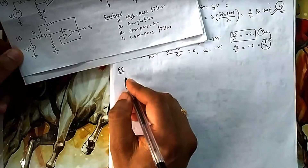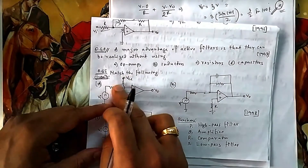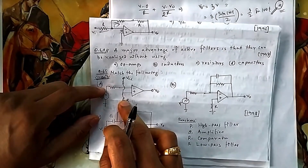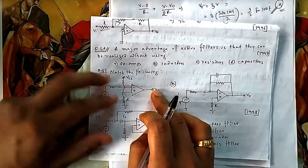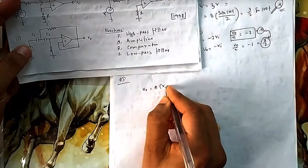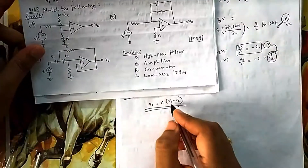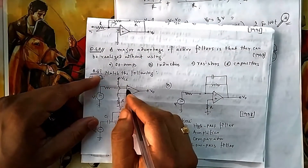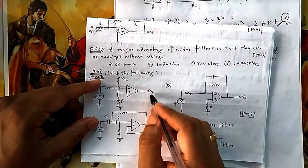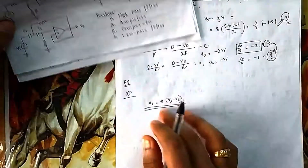In question 65, we match circuits to their functions. Circuit A has no feedback — it is open loop. An open-loop op-amp compares V1 and V2, with output A(V1 − V2). Since it is ideal, only the differential mode appears. If the non-inverting terminal gets more voltage, output swings positive; otherwise negative. So circuit A is a comparator.